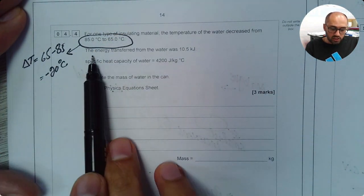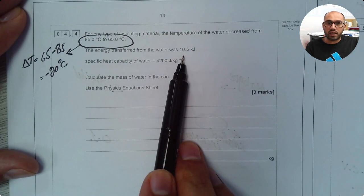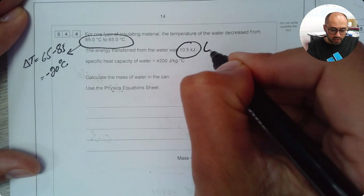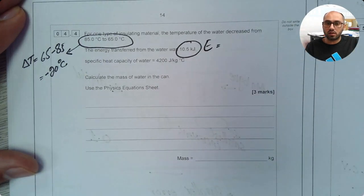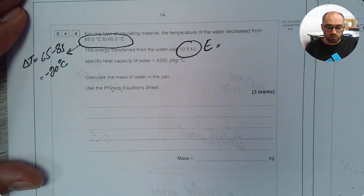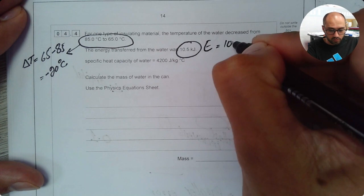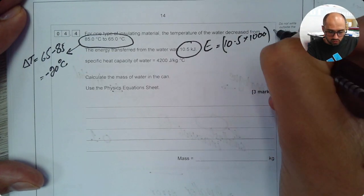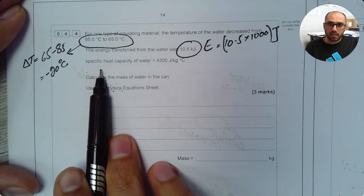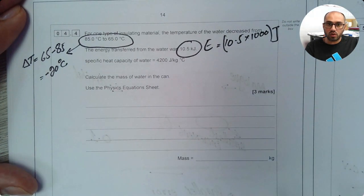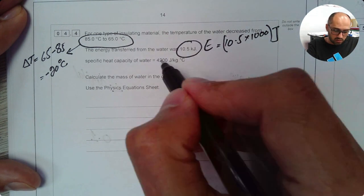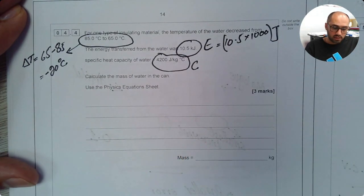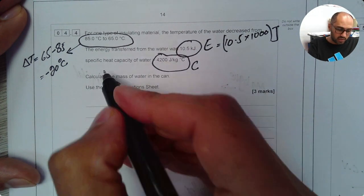So the energy transferred from the water was 10.5 kilojoules. This is the value of E but I can't use it in this form because it's kilojoules. So I'll have to convert it into joules and for that I can do 10.5 times 1000 and this is now in joules. Then it says the specific heat capacity of water is 4200 joules per kilogram degree Celsius. So this is the value of specific heat capacity which is letter C.